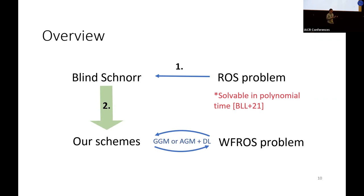Next, I will show our idea to avoid the ROS attack that underlies our schemes. Under some assumptions, we can show the security of our scheme is equivalent to solving the WFROS problem, which is a problem we define in our paper. And in contrast to the ROS problem, we can actually show WFROS is exponentially hard, which implies the exponential security of our scheme.